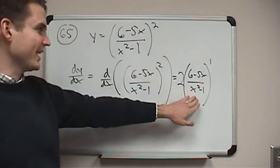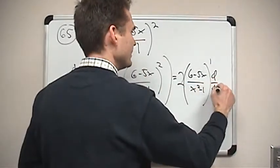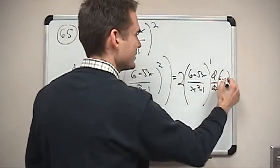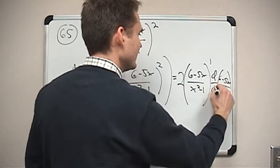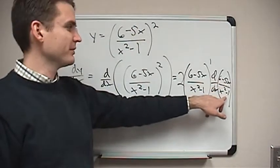And this is where we have a little bit more work to do. It's not just that, it's times the derivative of what's inside. So we have to multiply by the derivative of, I can probably just barely tuck it in here, 6 minus 5x over x squared minus 1. Okay, so what I'm doing here, I've got a couple more things to do. I actually have to use the quotient rule to compute this derivative.